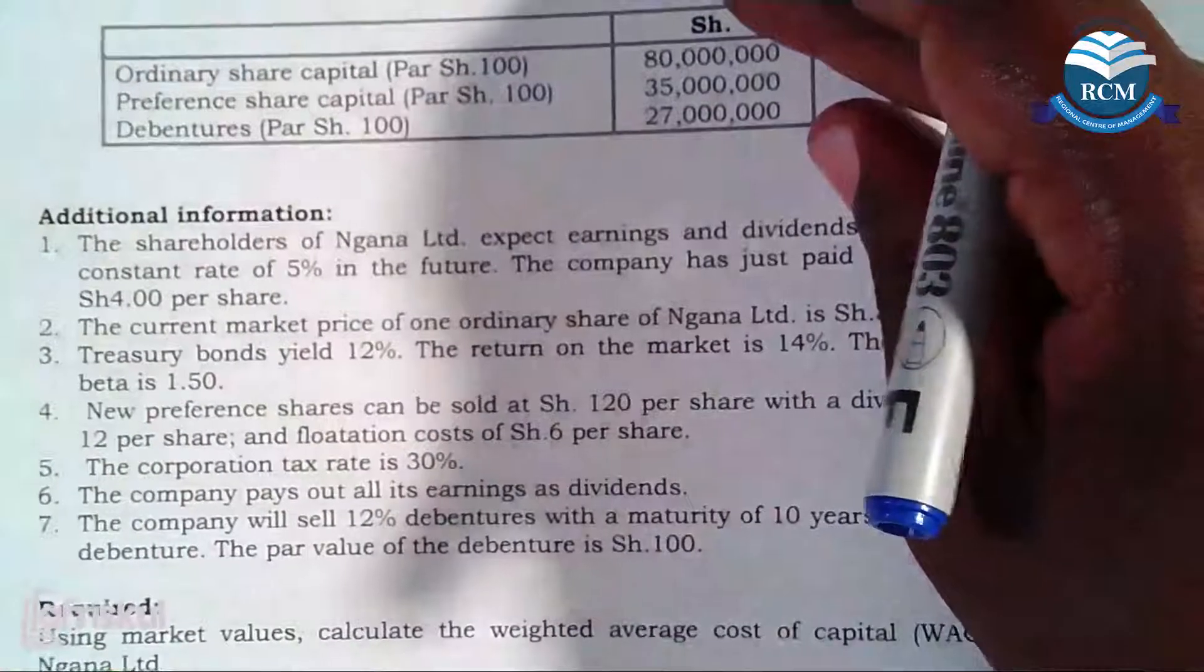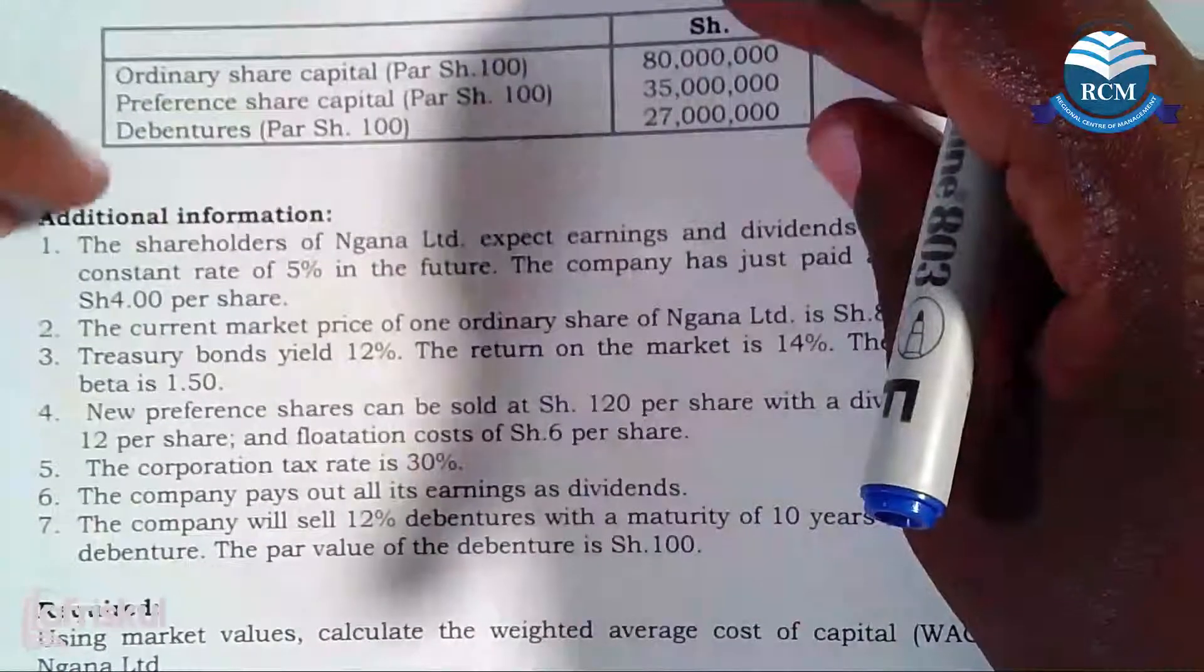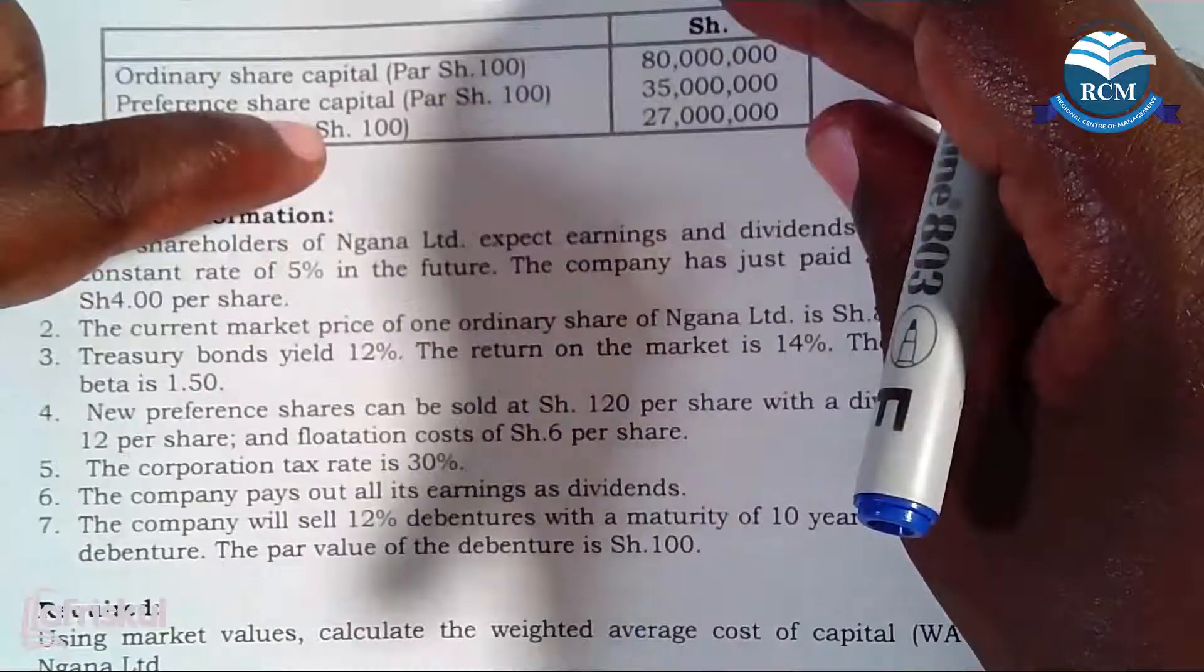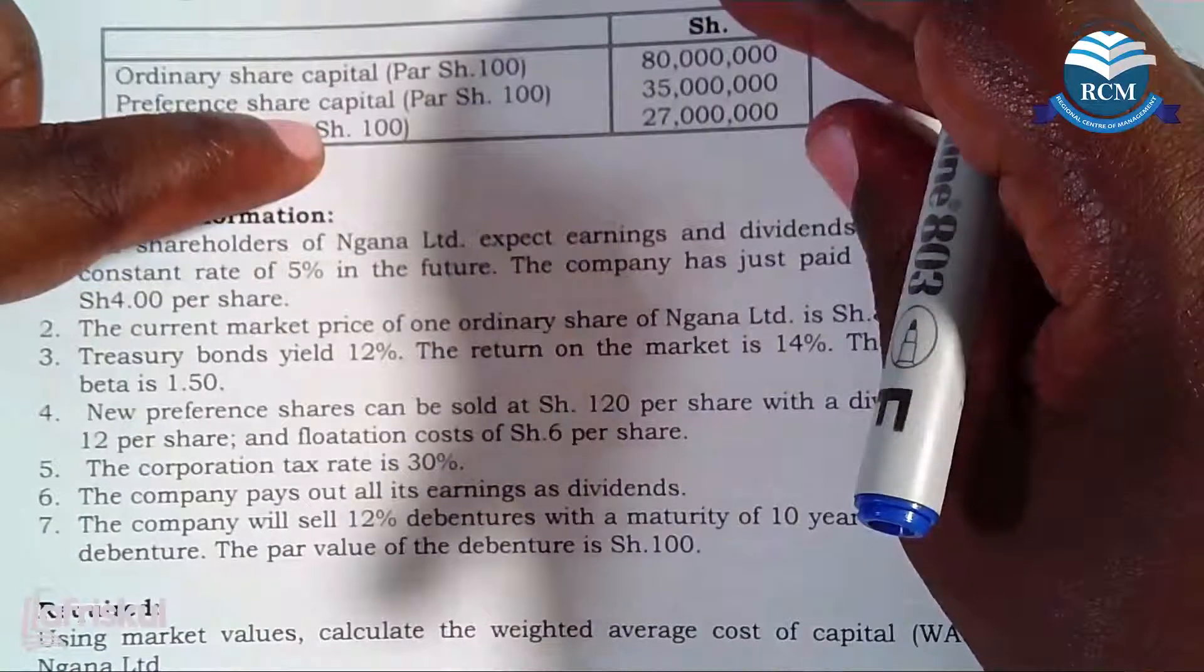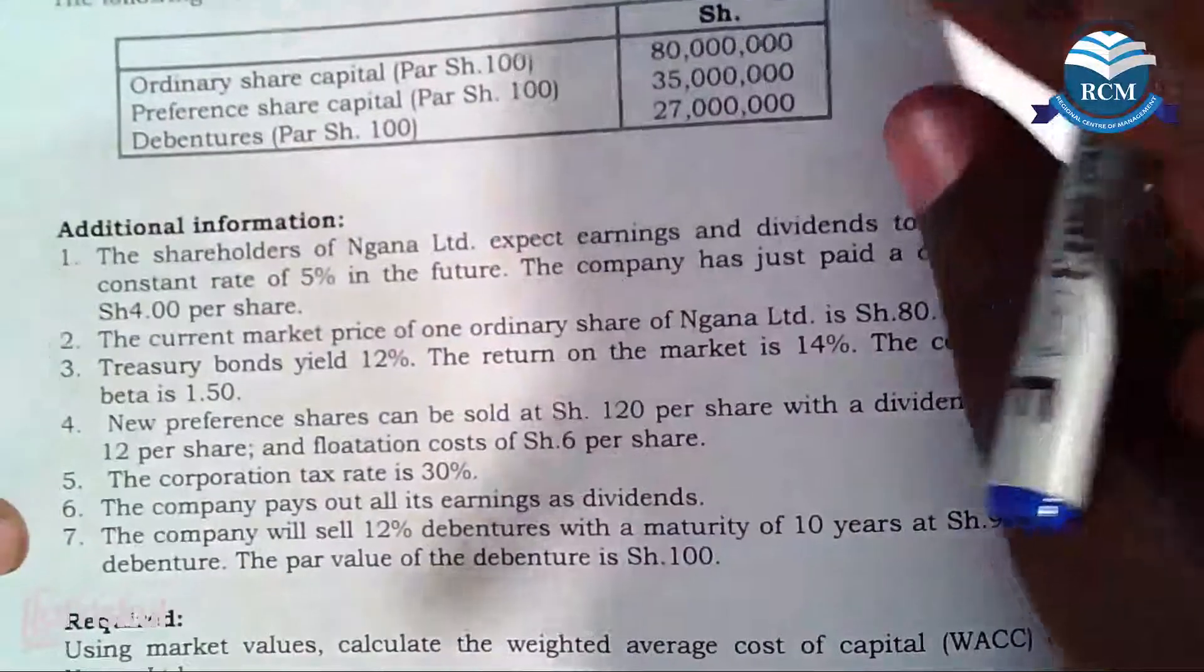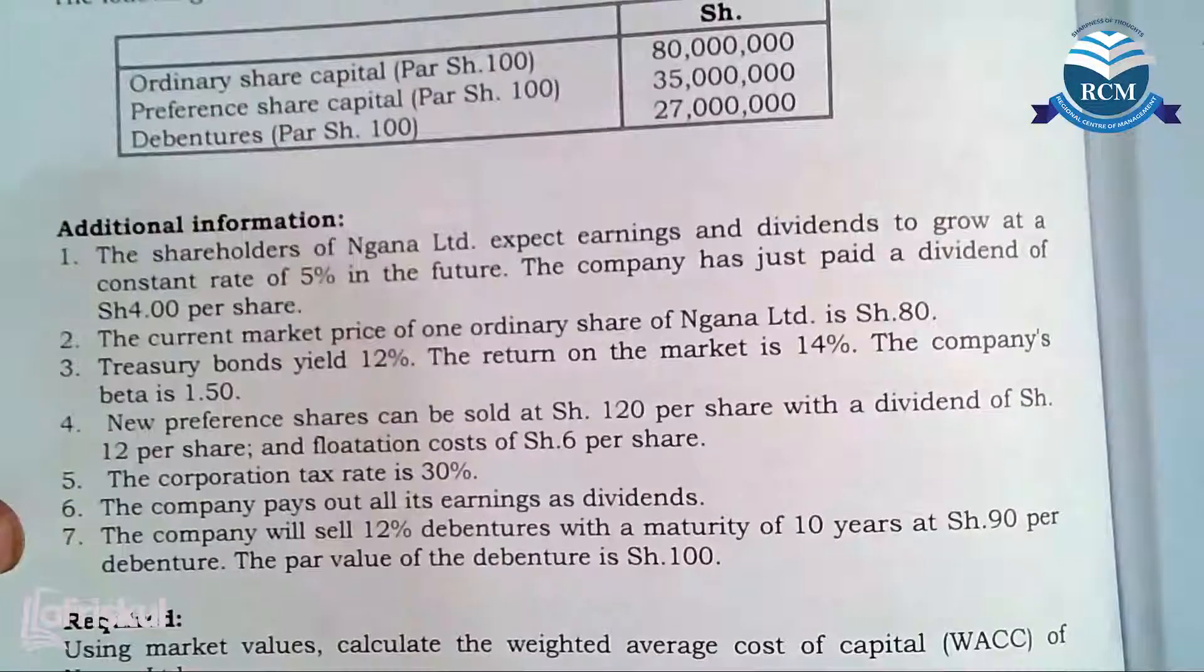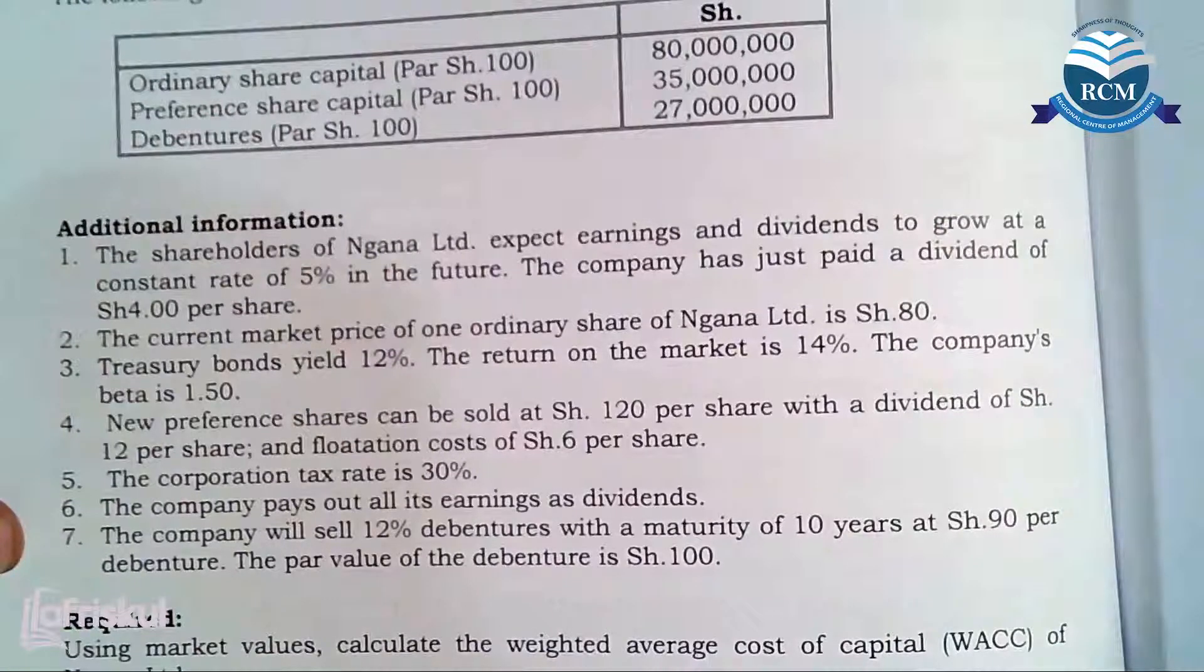Its par value is 100. The particular note talking about the debt is note number seven. You can see the company will sell 12 percent debentures with a maturity period of 10 years at 90 per debenture.